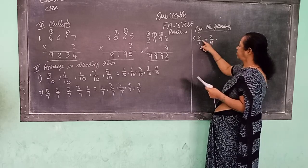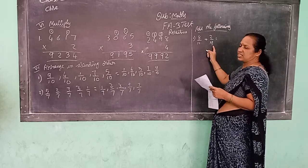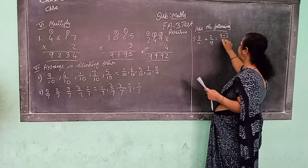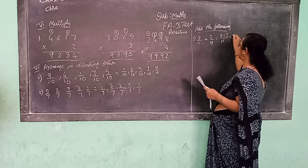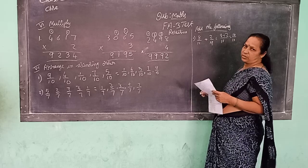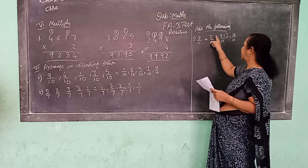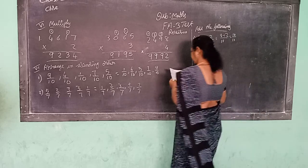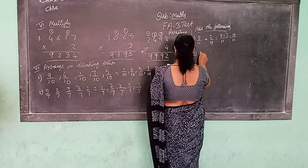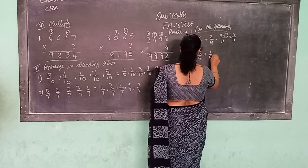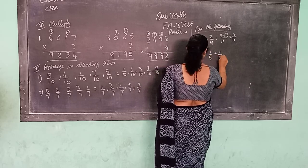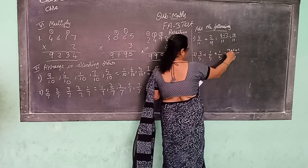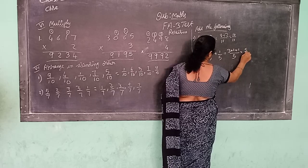See: 8 by 11 plus 2 by 11. Here denominators are the same, so you just add the numerators. 8 plus 2 by 11. 8 plus 2 is 10, so the answer is 10 by 11. You just add the numerator and keep the denominator as it is. Next: 3 by 5 plus 1 by 5 plus 1 by 5. 3 plus 1 plus 1 is 5, so 5 by 5.